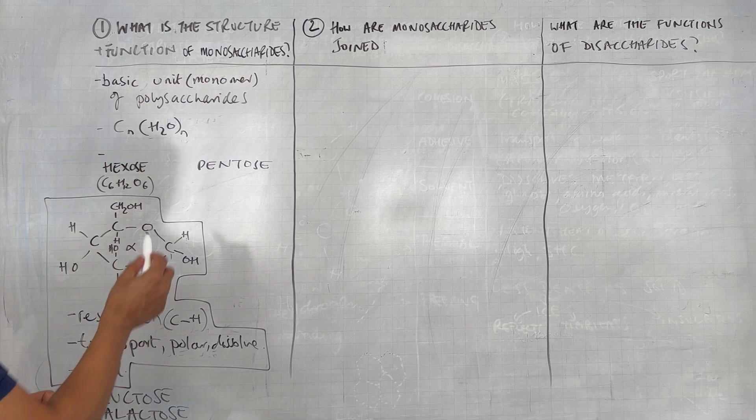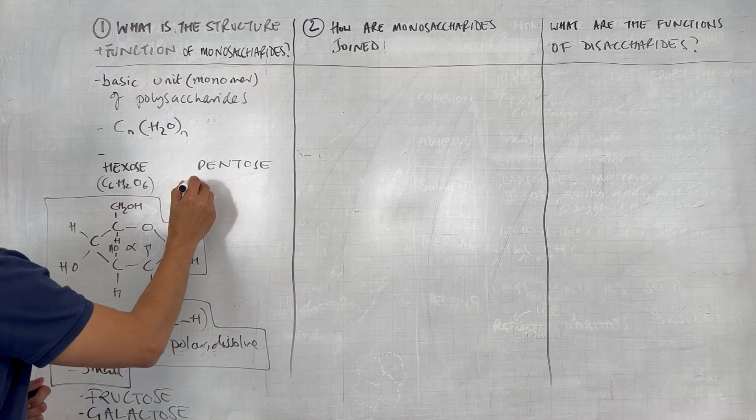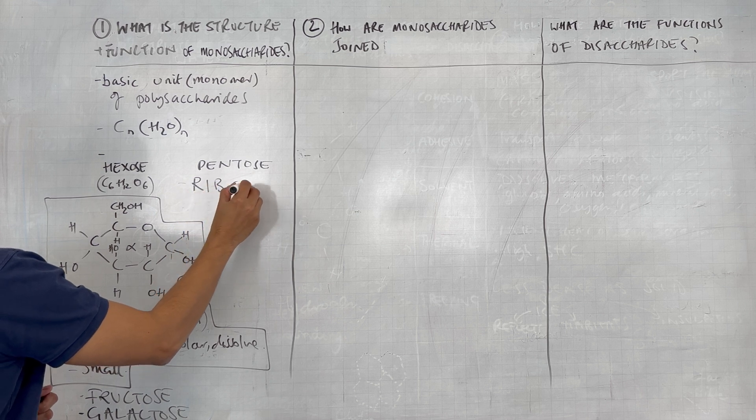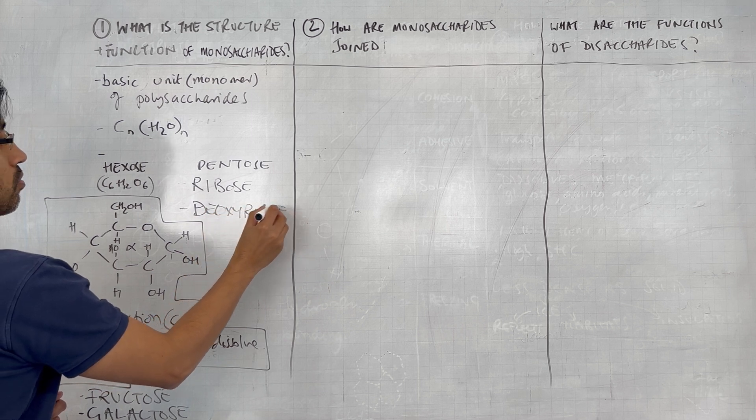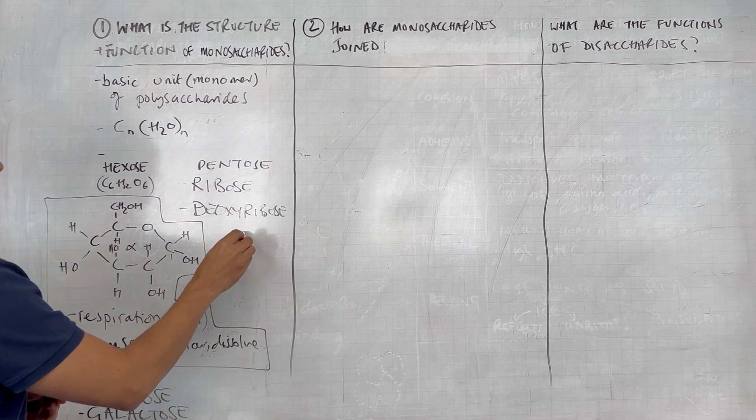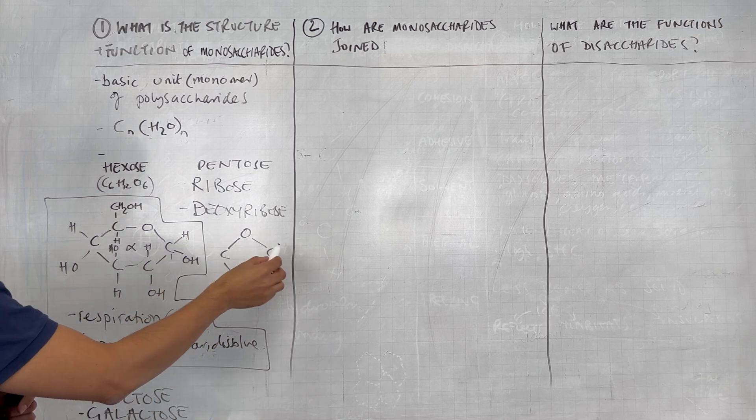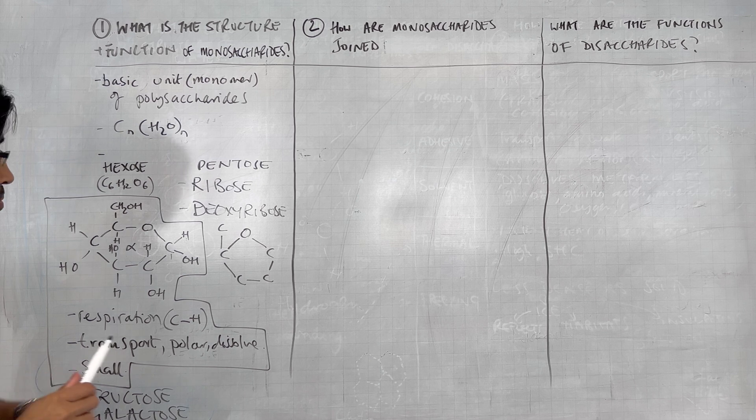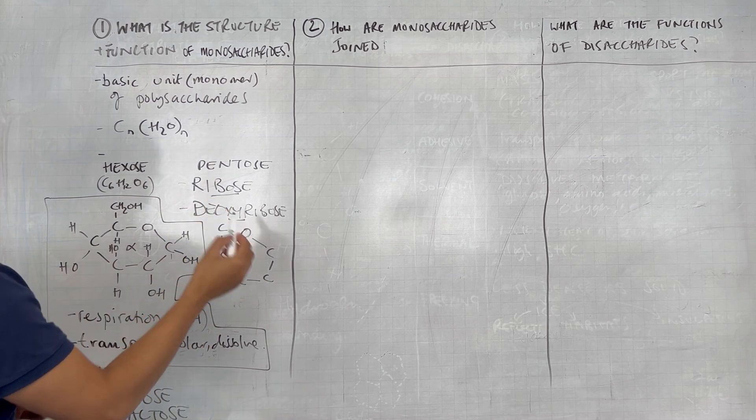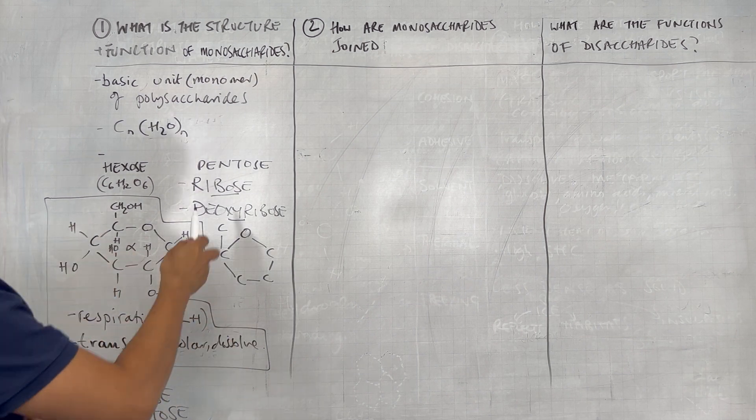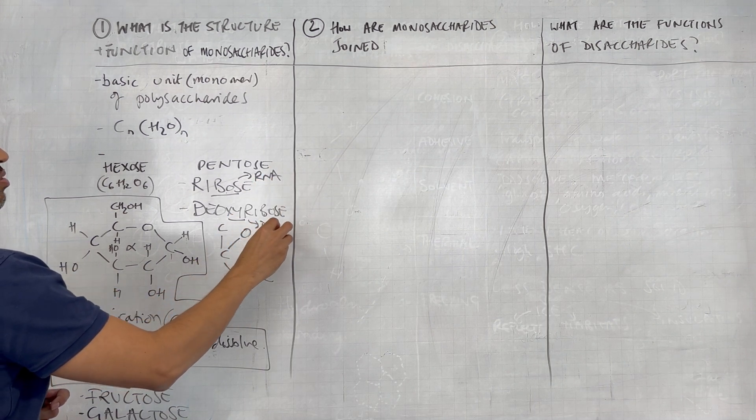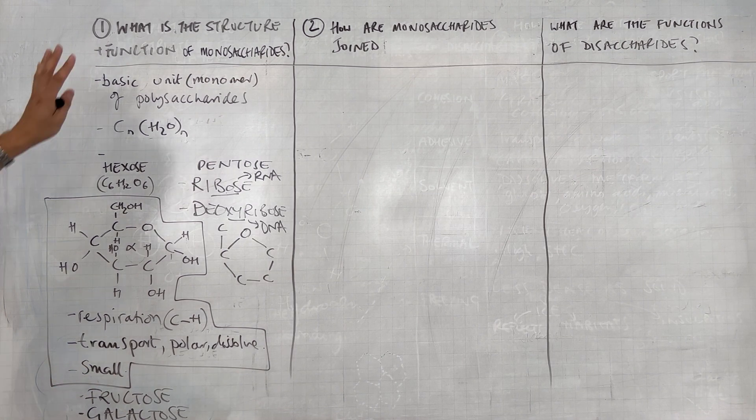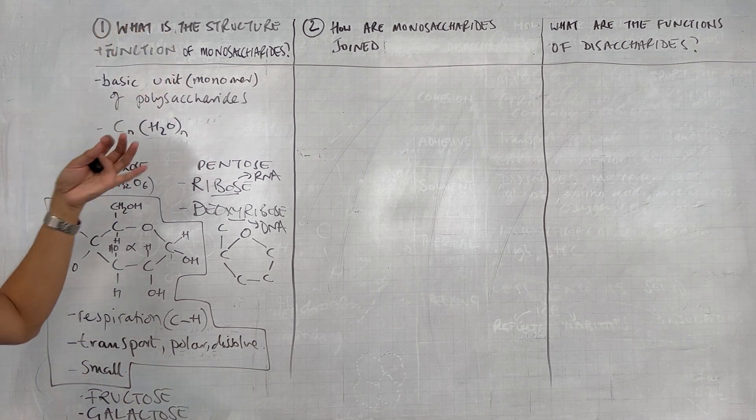In terms of pentoses, there are very important pentose sugars as well. The two that we need to know about are ribose and deoxyribose. What does a pentose sugar look like? It looks like it's got an oxygen there and it's got a five-membered ring, but there's only four carbons in the ring. And then we have a fifth carbon sticking out up there. Now ribose and deoxyribose are important in the nucleic acids. So in terms of functions, ribose is important in the structure of RNA and deoxyribose is important in the structure of DNA. And I believe that concludes our answering of the first question, which is what is the structure and function of monosaccharides.